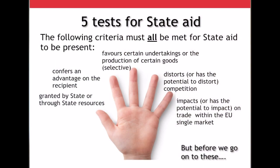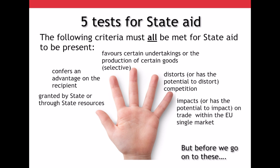So how do we know when something is or isn't state aid? There are five criteria which need to be met for state aid to be present. The first is that the aid is granted by the state or through state resources. The second is that the aid confers an advantage upon the recipient. The third is that the aid favours certain undertakings or the production of certain goods, so is selective. The fourth is that the aid distorts or has the potential to distort competition. And finally, that the aid impacts or has the potential to impact upon trade within the EU single market.